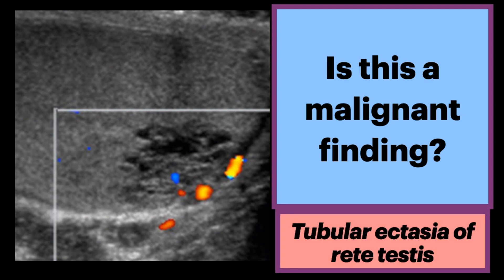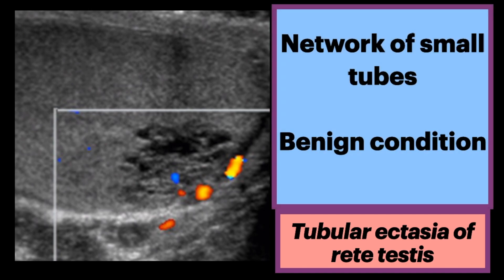The diagnosis here is tubular ectasia of the rete testis. The rete testis is a network of small tubules in the testicle that help move sperm cells from the testicle to the epididymis. It is a benign condition thought to result from the partial or complete obliteration of the efferent ducts. These spermatozoa-containing cysts communicate with the tubular system into the epididymis.